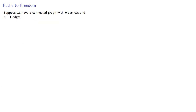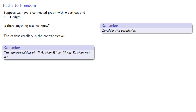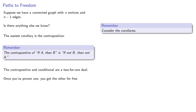Now suppose we have a connected graph with n vertices and n-1 edges — is there anything else we know? A good way forward is to consider the corollaries. The easiest corollary to find is a contrapositive. Remember, the contrapositive of the conditional "if A then B" is "if not B, then not A." The contrapositive and conditional are a two-for-one deal: once you've proven one, you get the other for free, so you might as well take it.